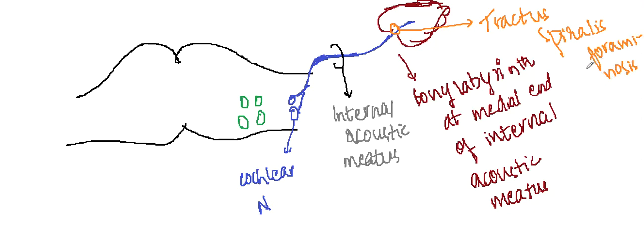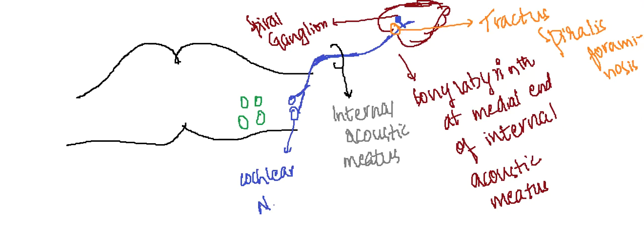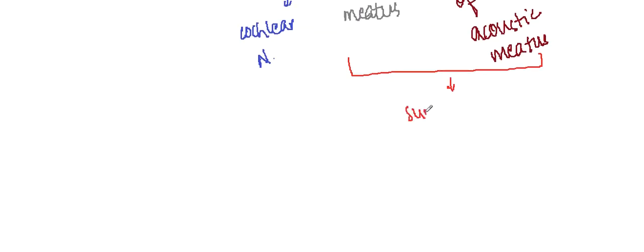In the internal ear there is a spiral ganglion, which is also made up of bipolar neurons. From there, the cochlear nerve supplies the cochlea for the purpose of hearing.